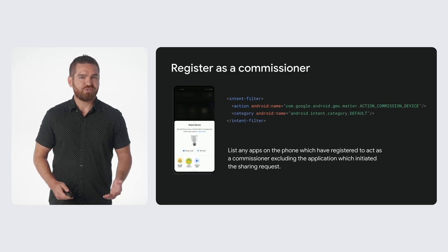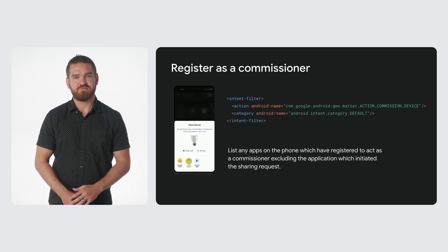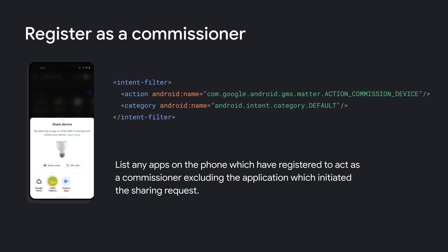To register as a commissioner, use the following intent filter in your app. Then when a sharing action is initiated by the user, your app will be included in the list unless it is the app initiating the share request.